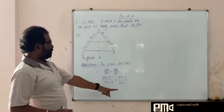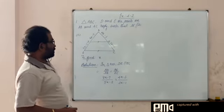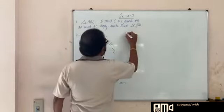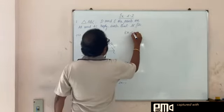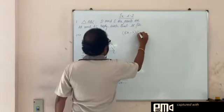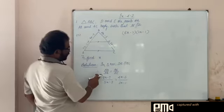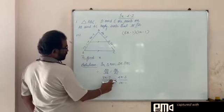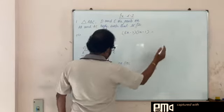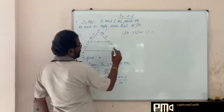When two fractions are equal, we know how to cross multiply. We cross multiply: 8x minus 7 into 3x minus 1 is equal to 5x minus 3 into 4x minus 3.